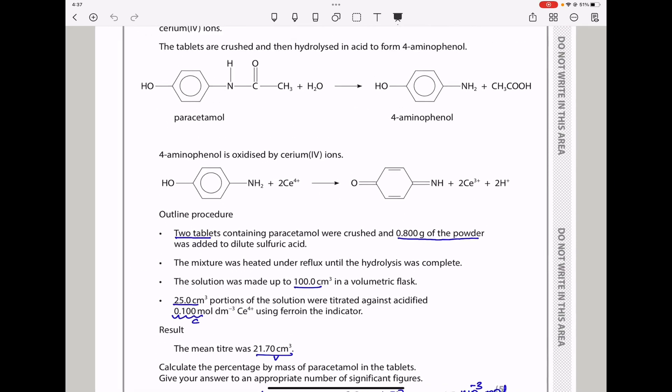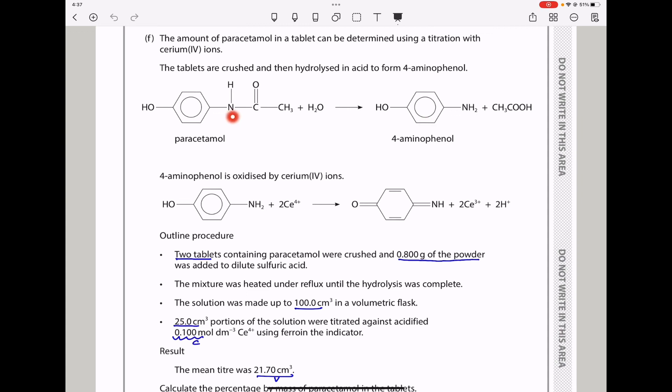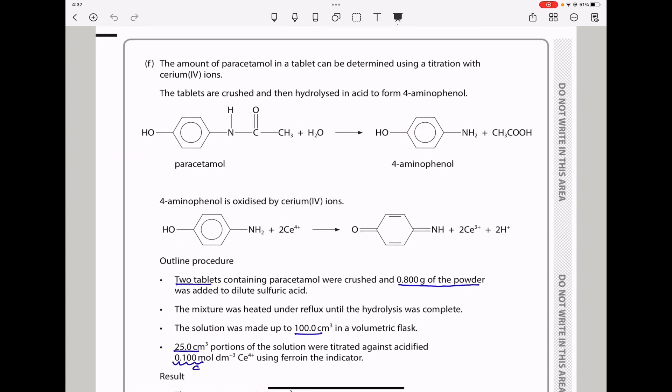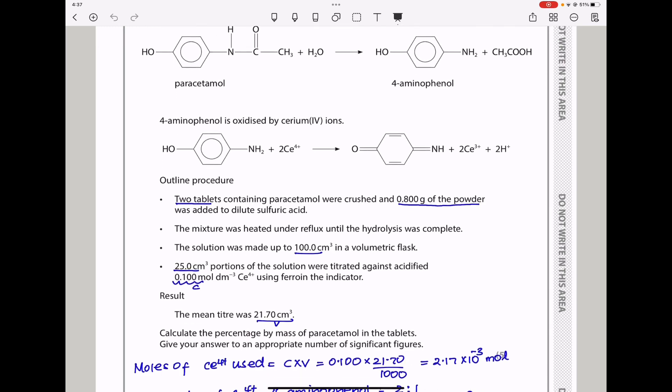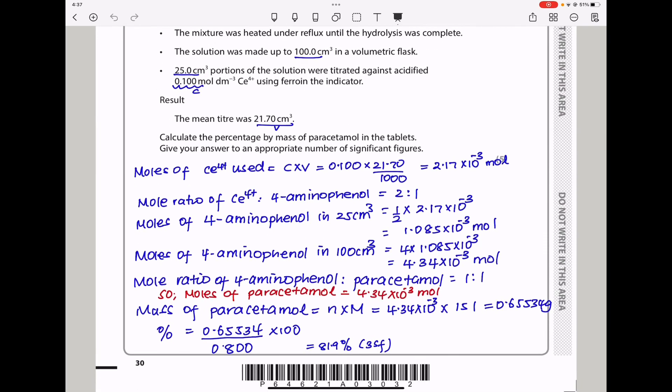Now I need to calculate the number of moles in 100 centimeters cubed. So moles of 4-aminophenol in 100 centimeters cubed should be 4 times this number of moles. Remember if these are in 25, 100 is 25 times 4. The moles of paracetamol are also equal to the moles of 4-aminophenol and therefore the mass of paracetamol should be the number of moles times the molar mass. The percentage by mass is the mass of paracetamol divided by the mass of the powder times 100 and that gave me 81.9% and this was to 3 significant figures.